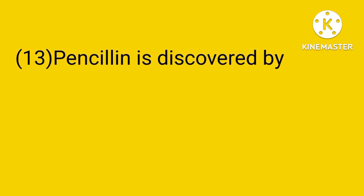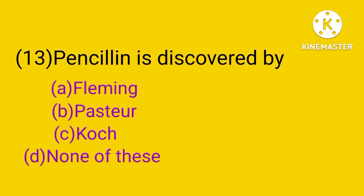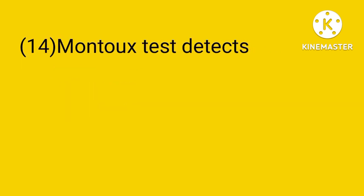Number 13. Penicillin was discovered by: Fleming, Pasteur, Koch, or none of these. The answer is A. Penicillin was discovered by Fleming. His full name is Dr. Alexander Fleming.